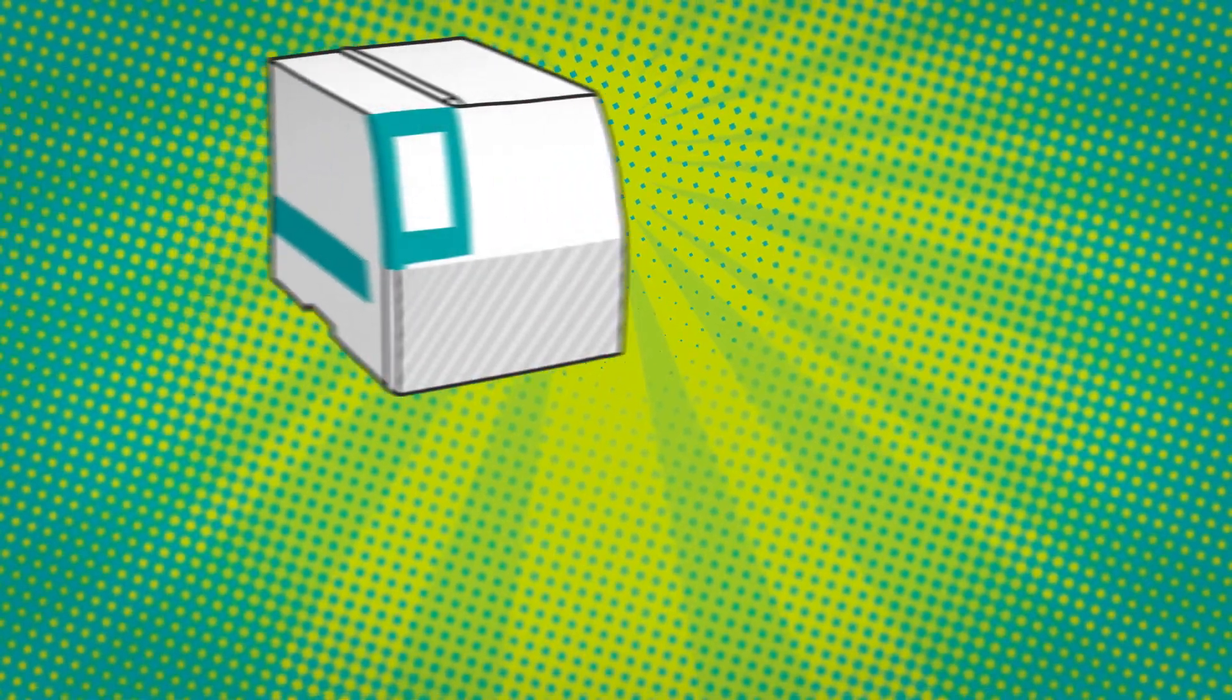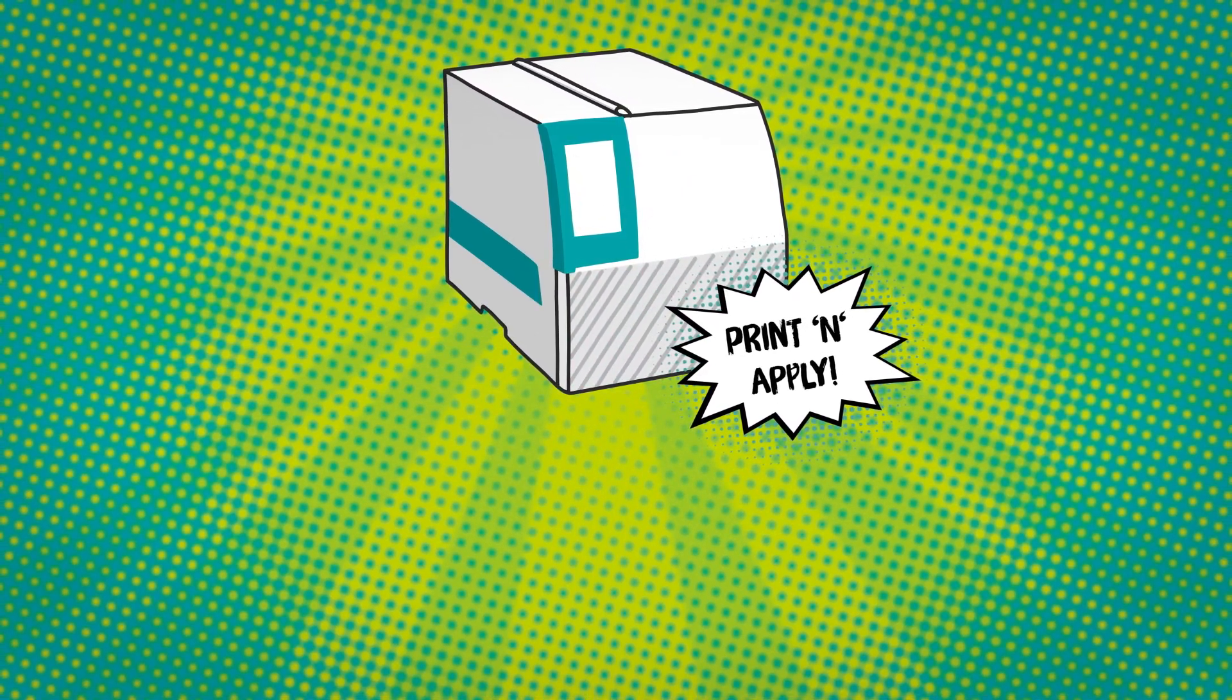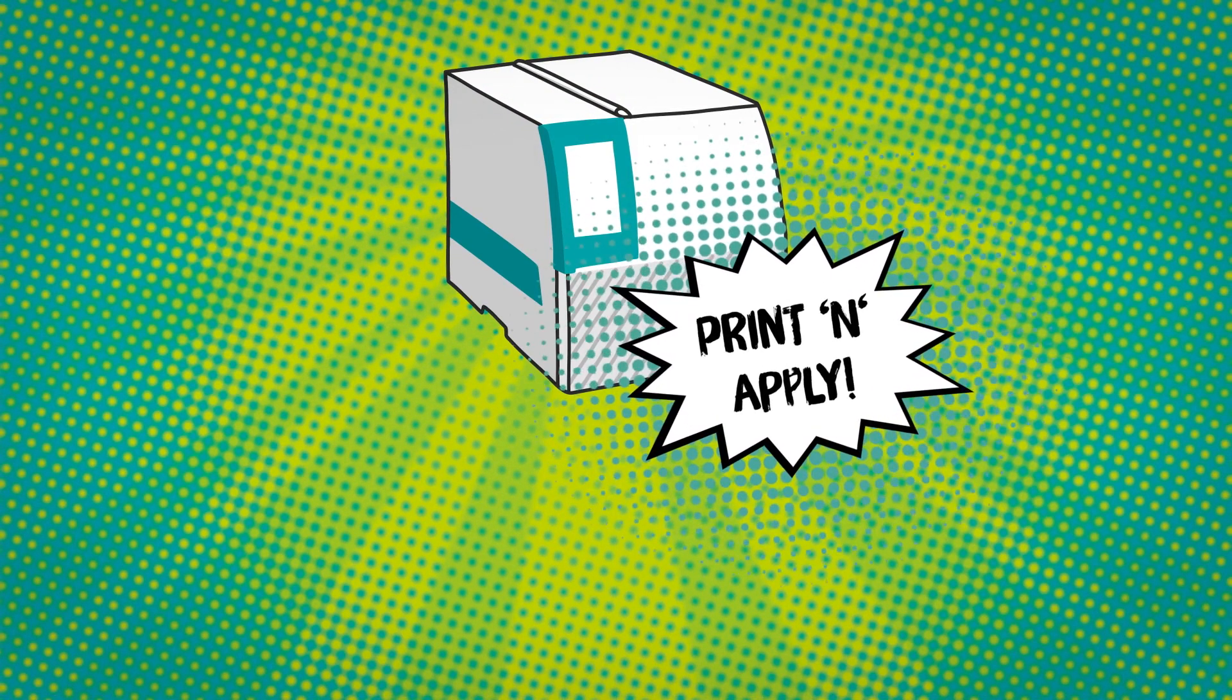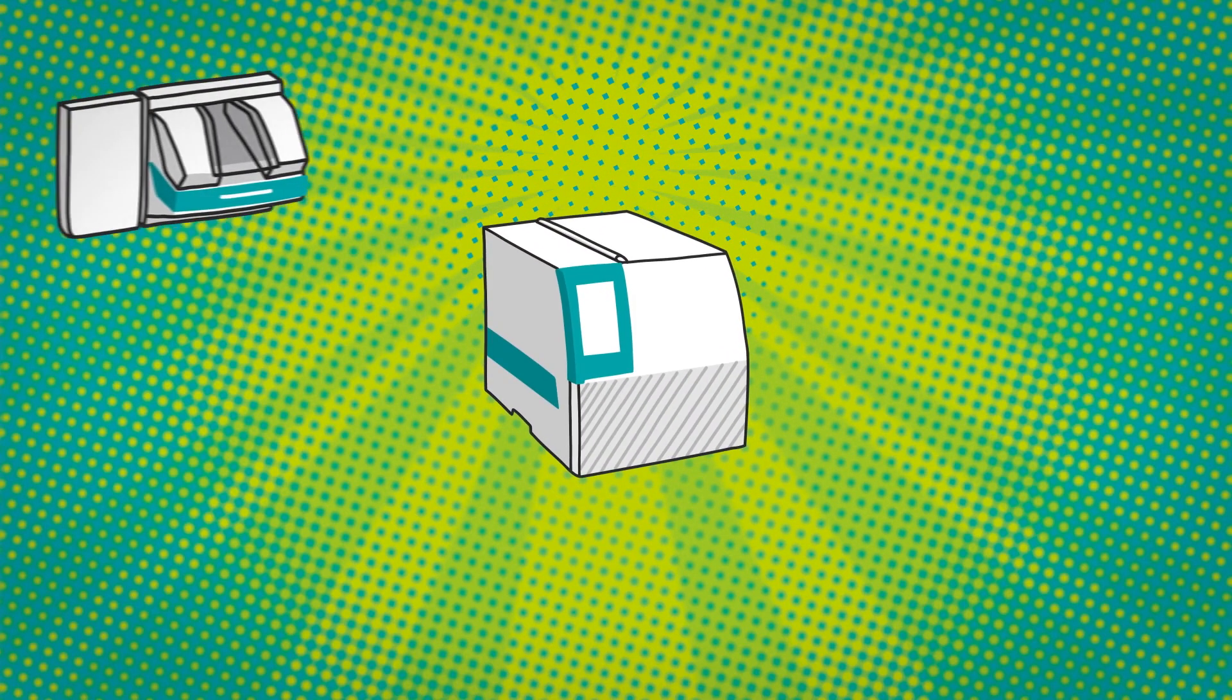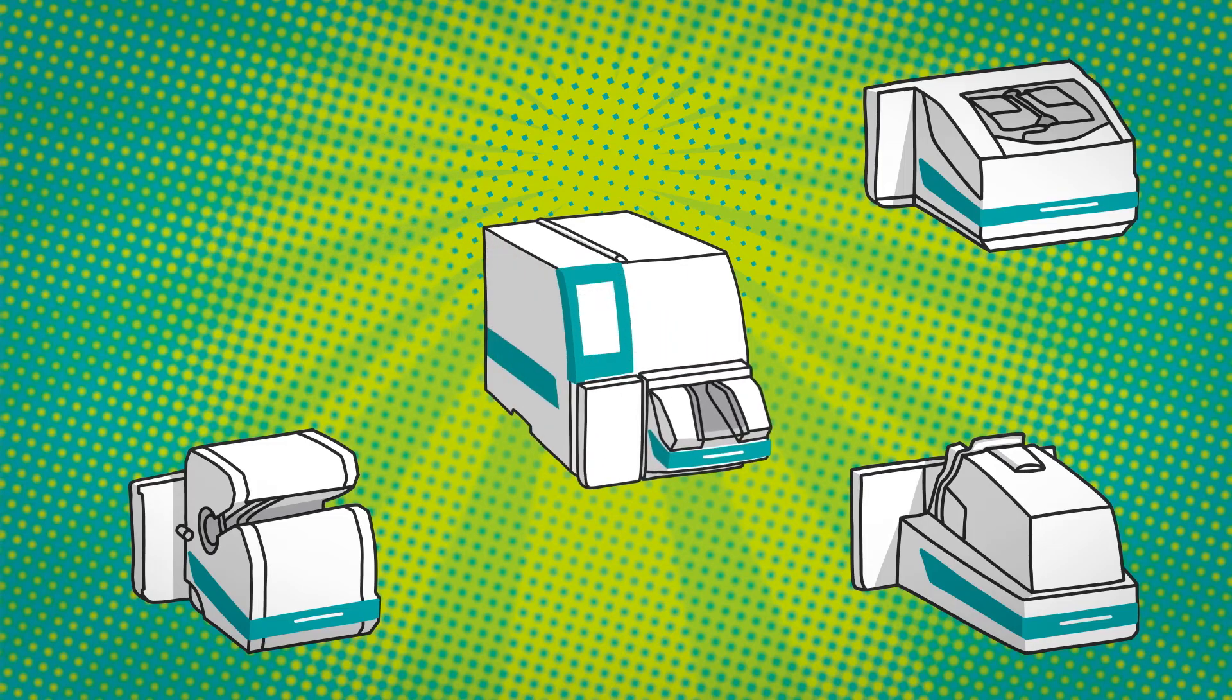The Thermomark E-Series is the world's first modular system to automate and combine printing and applying in just a single efficient process step. To do this, the standard thermal transfer roll printer is simply connected to one of four applicators.